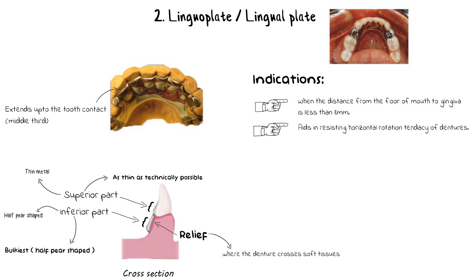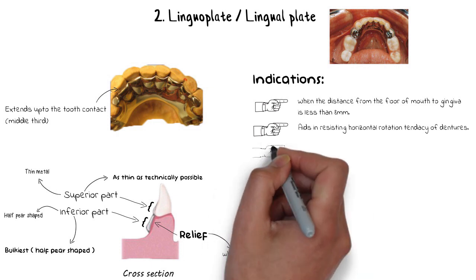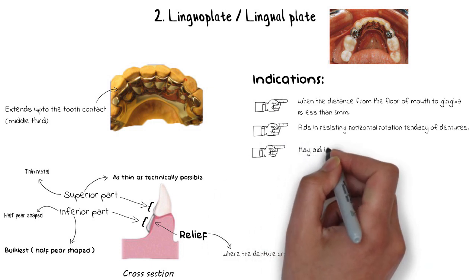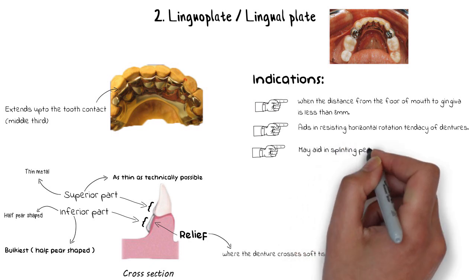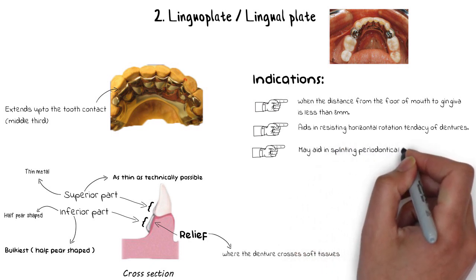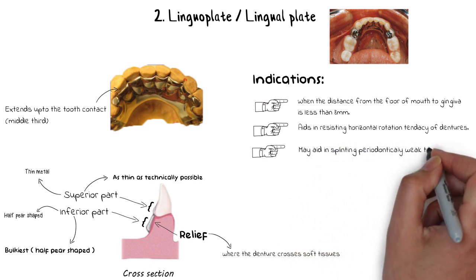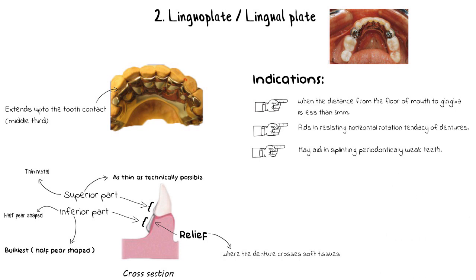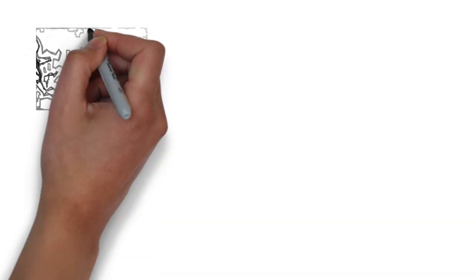The lingual plate can also offer a splinting role for periodontally weak teeth. With definitive rests in place, it can act as a means of holding periodontally weak teeth together, provided that the major connector is accurately contoured and fabricated. A lingual plate is also strongly recommended when anterior teeth show interproximal spacing.